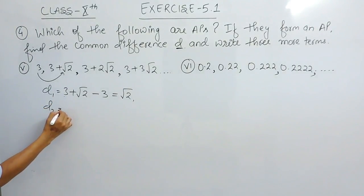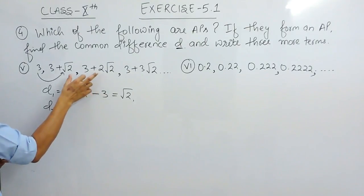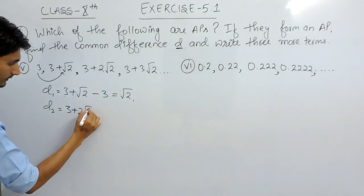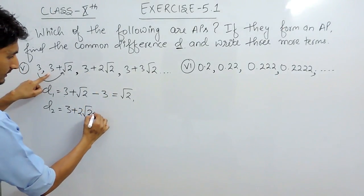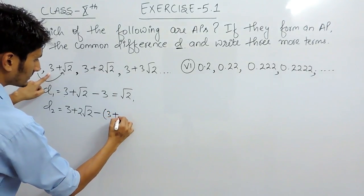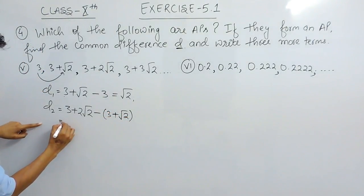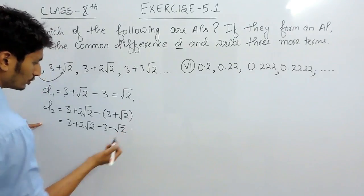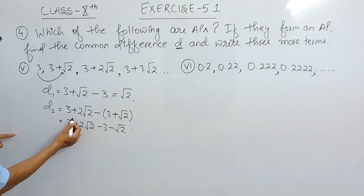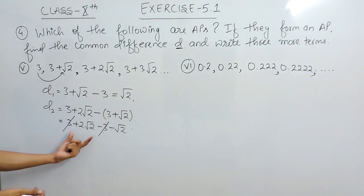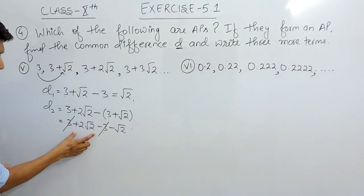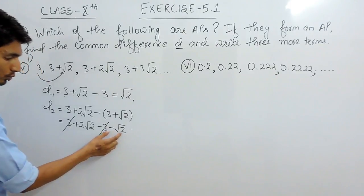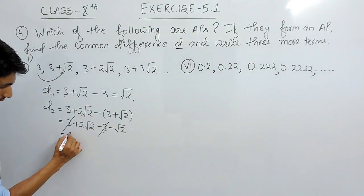Similarly, to find the second common difference, I subtract this value from this value: (3 + 2√2) minus (3 + √2). Solving it: 3 + 2√2 minus 3 minus √2. The 3s cancel out, and since plus and minus gives minus, subtracting 1√2 from 2√2 gives √2.